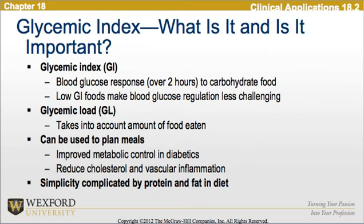The glycemic index is the blood glucose response over two hours to carbohydrate food. Low GI foods make blood glucose regulation less challenging. There is also a glycemic load, which takes into account the amount of food eaten. It can be used to plan meals, improve metabolic control in diabetics, and reduce cholesterol and vascular inflammation. This is complicated by protein and fat in the diet.